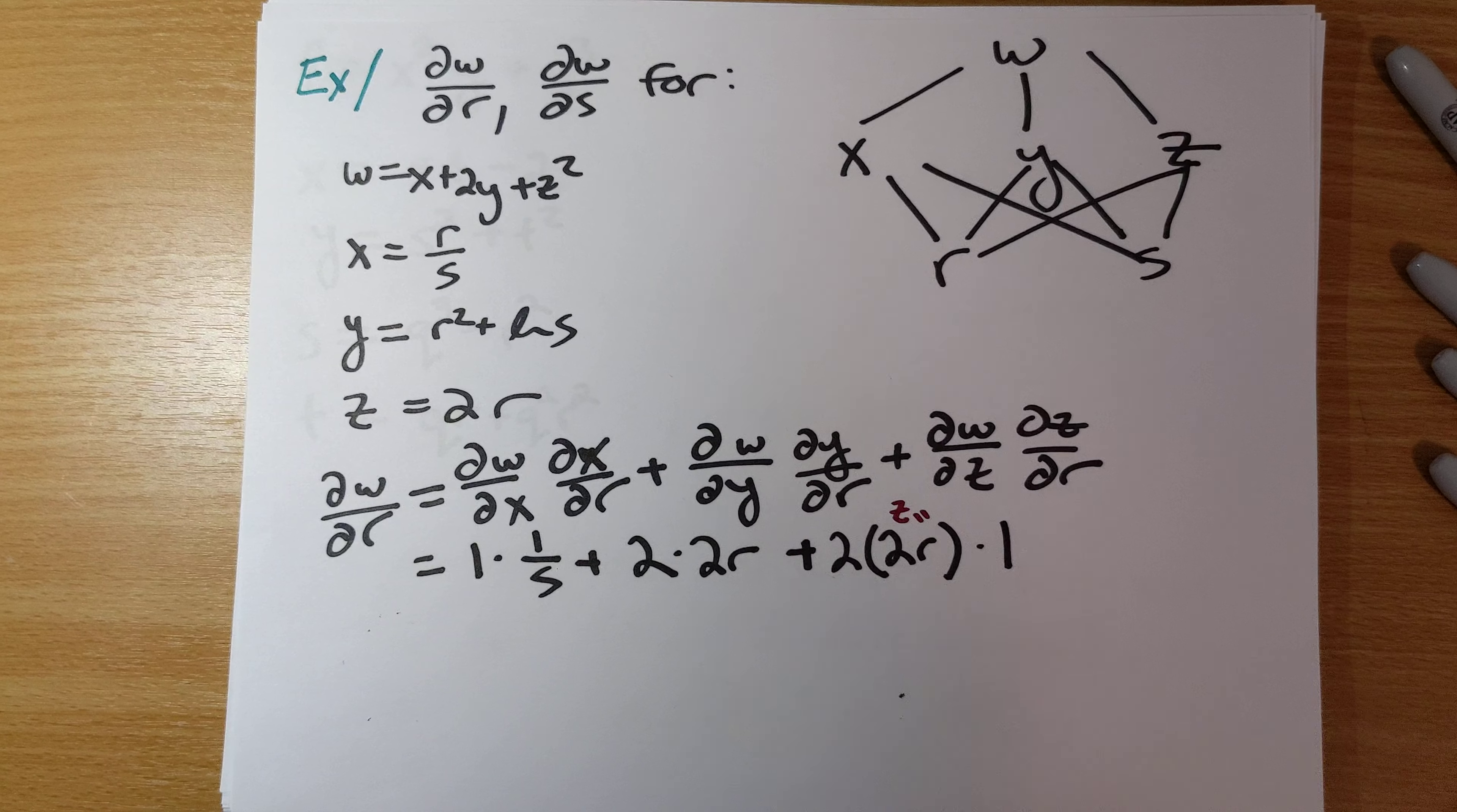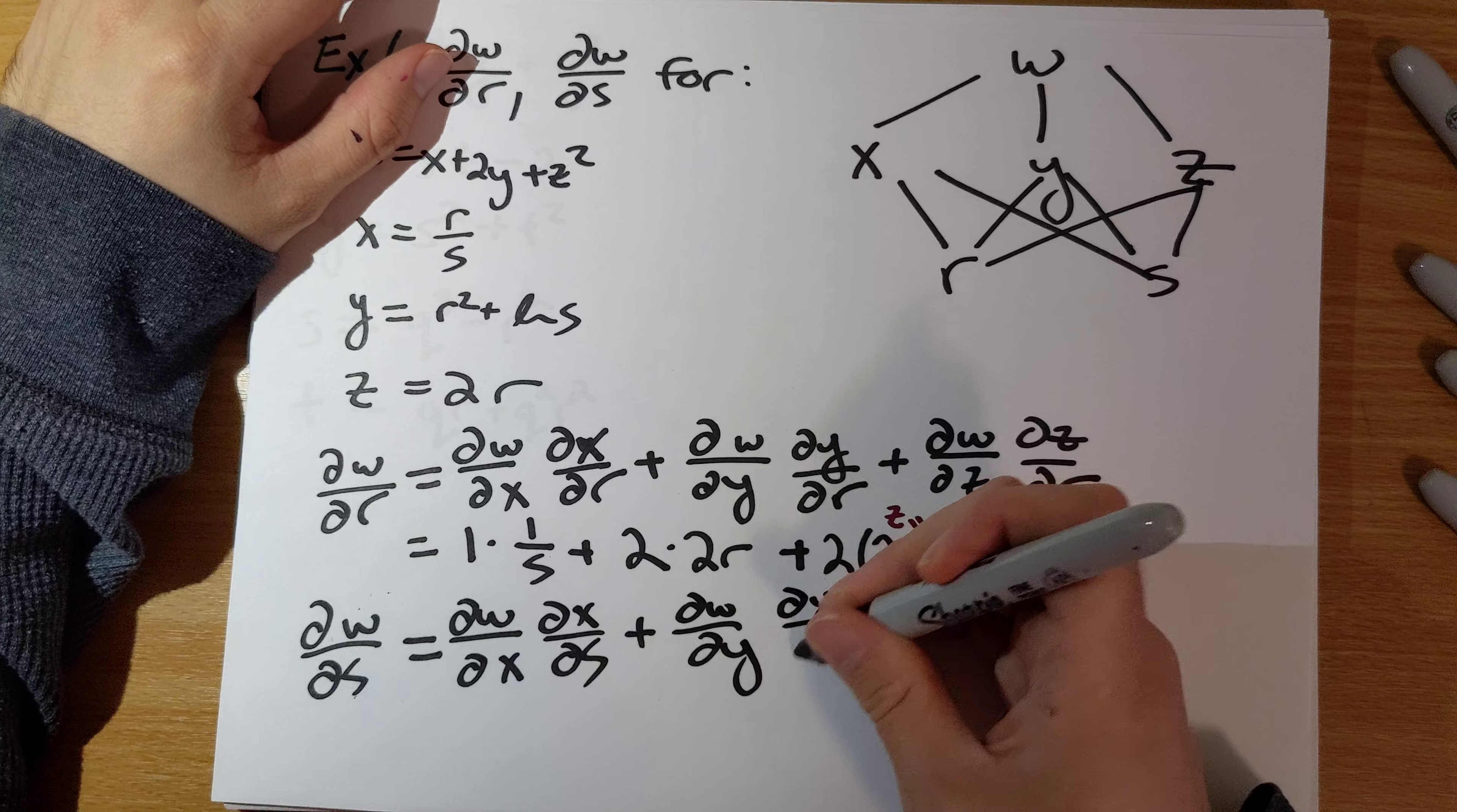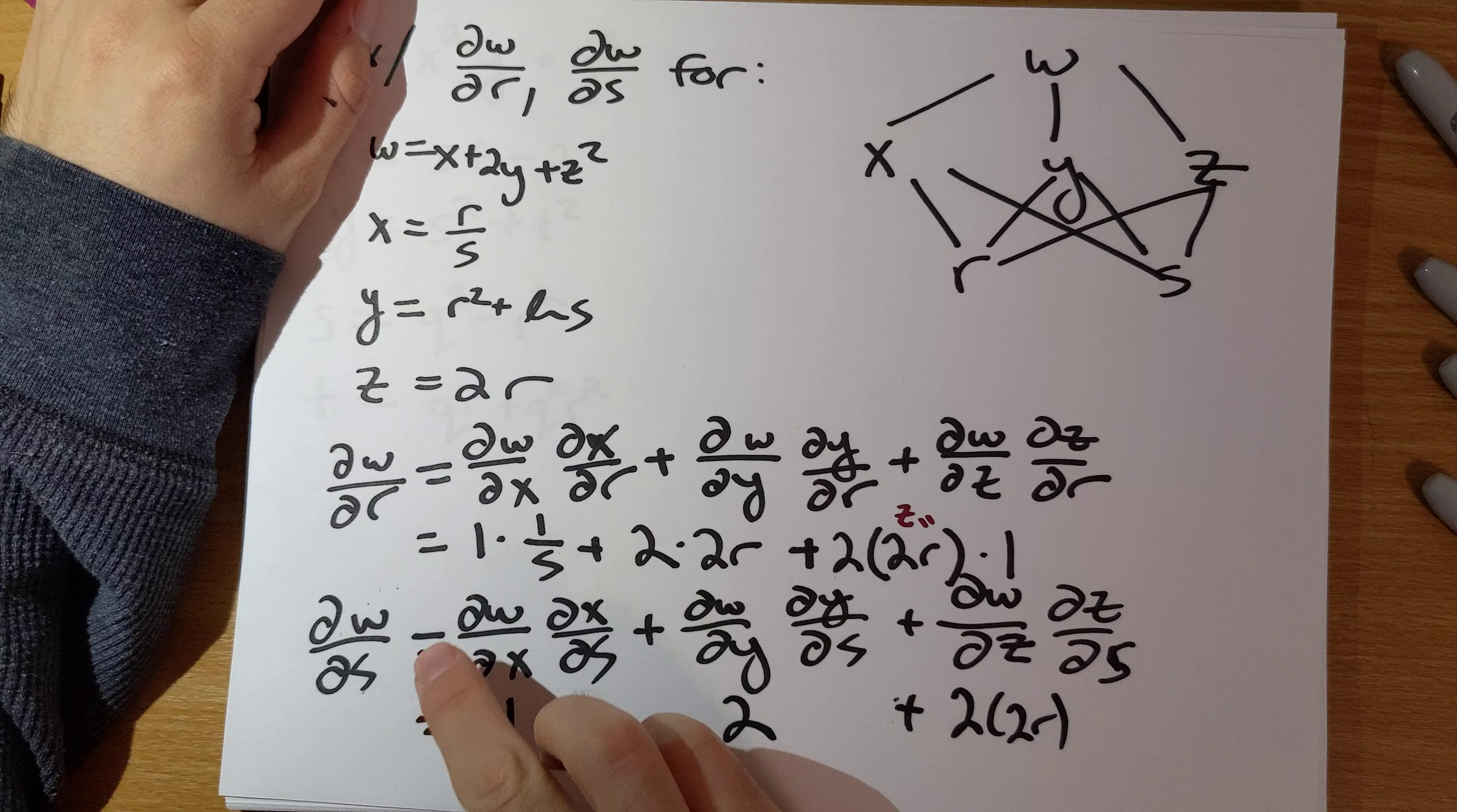So there is partial W partial R. Partial W partial S is going to be how do we go from W to S through X, through Y, or through Z. Partial W partial X times partial X partial S plus partial W partial Y times partial Y partial S plus partial W partial Z times partial Z partial S here. And what do we end up with? That one doesn't change, that two doesn't change and that two times two r those don't change. The partial derivatives of W respect to X Y and Z don't change.